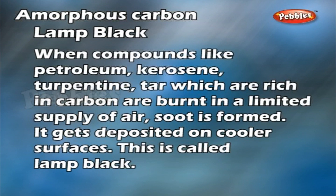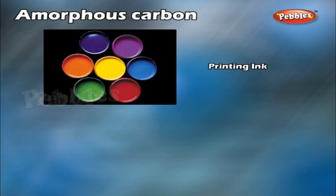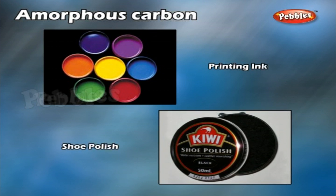Lamp black: When compounds like petroleum, kerosene, turpentine, and tar, which are rich in carbon, are burnt in a limited supply of air, soot is formed. It gets deposited on cooler surfaces — this is called lamp black. Uses: It is used for the preparation of printing ink and shoe polish.